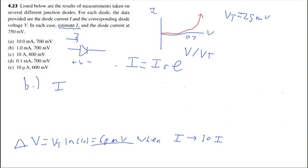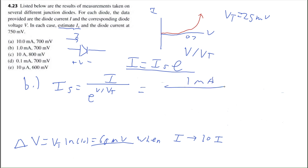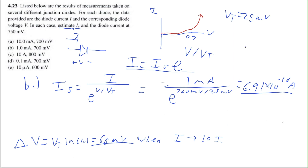For part B, we use the same equation: IS equals I divided by E to the diode voltage divided by thermal voltage. The current is 1 milliamp, divided by E to the power of 700 millivolts divided by 25 millivolts. This equals 6.91 times 10 to the negative 16 amps — notice this is just a tenth of part A, which was 6.91 times 10 to the negative 15. We reduced the diode current by a factor of 10, and the source current reduced by the same factor, showing that diode current is directly proportional to source current.